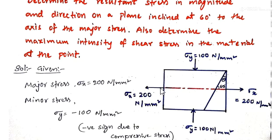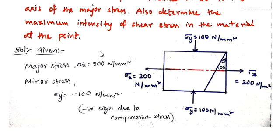We are taking the major stress in the x direction. This oblique plane is making 60 degrees with the axis of the major stress. So the given data: major stress sigma x = 200 N/mm², and sigma y = minus 100 N/mm². We are taking the negative sign because it is compressive.